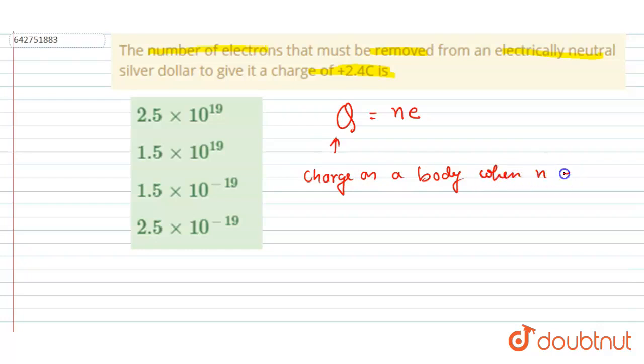When n electrons are removed from it. Okay, so you can see the number of electrons to be removed from a body so that the body could have this much charge.